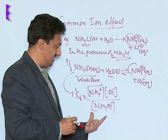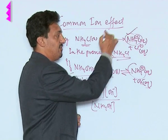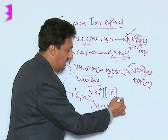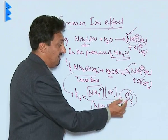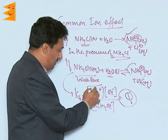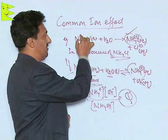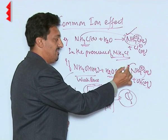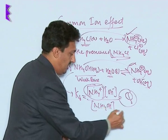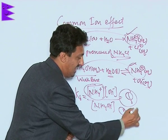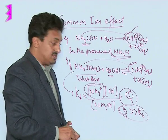Since there is already a large concentration of ammonium ions present in the solution, the reaction quotient Q for this system will be very large. This is because the ammonium ion concentration includes contributions from the salt as well as from the base, making Q much larger than the equilibrium constant Kb.